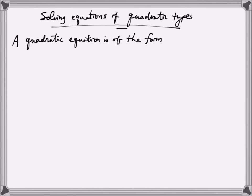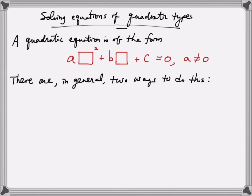An equation of the form: constant times the variable squared, plus constant times the variable, plus another constant equal to zero, where the leading constant is not equal to zero, is considered a quadratic form. There are, in general, two ways to solve a quadratic equation: first is by factoring, and the second is by using the quadratic formula.